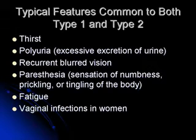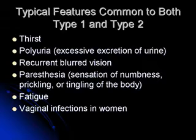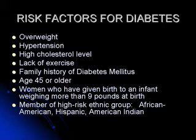There are features common to both type 1 and type 2, and these are thirst, excessive excretion of urine called polyuria, recurrent blurred vision, sensation of numbness, prickling or tingling of the body, fatigue, and vaginal infections in women.